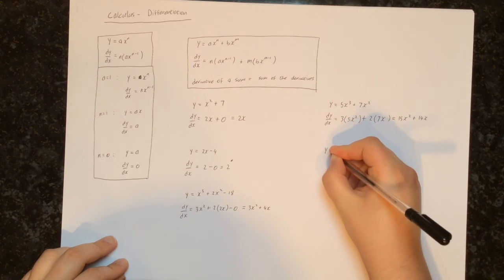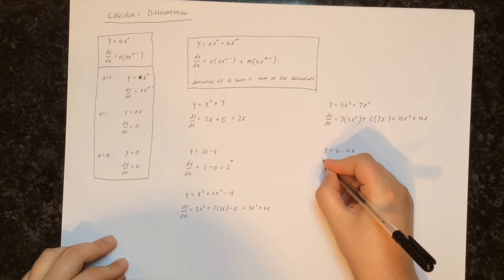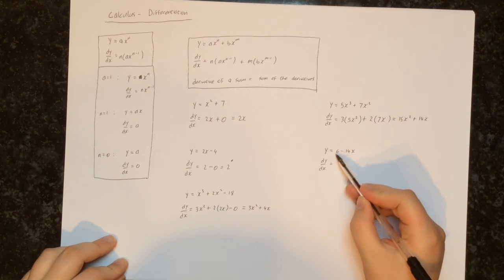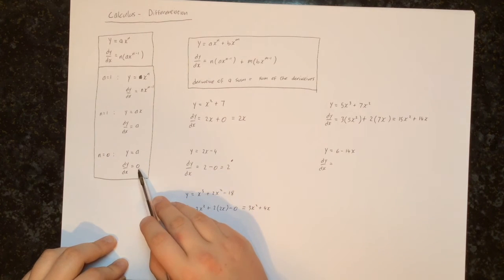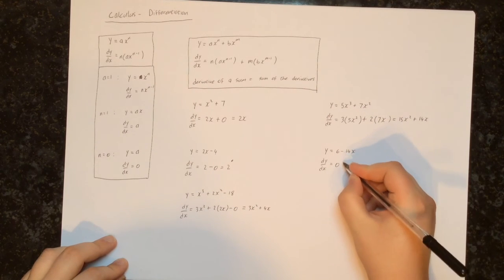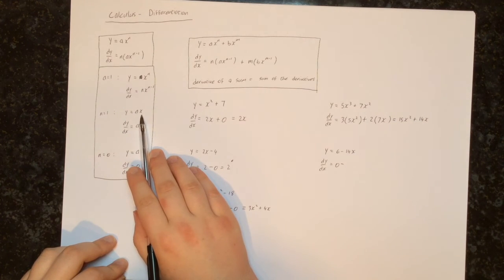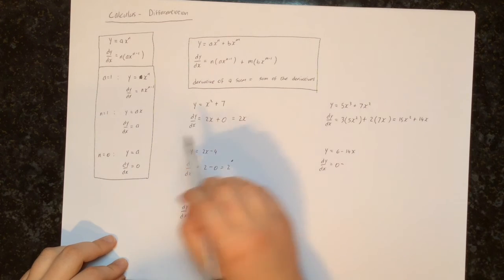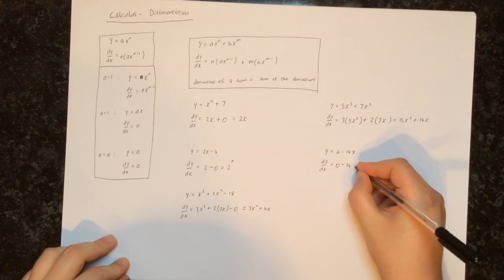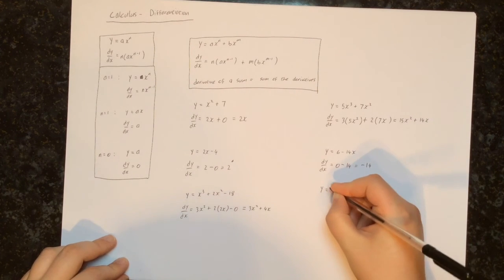Next let's try y equals 6 minus 14x. To get the derivative we differentiate each thing separately. First, 6 is just a constant so differentiating gives 0. Then we've got our minus sign, and we differentiate 14x — that's a number times x, so we're just left with the number 14. So dy/dx is going to be equal to minus 14.